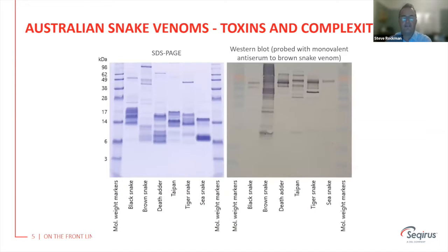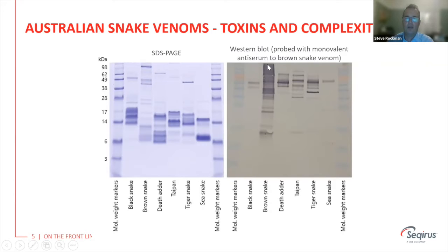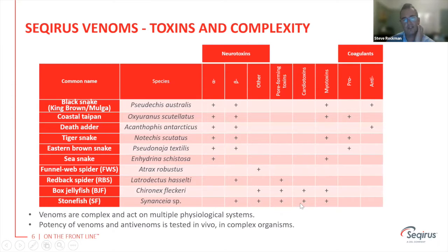On the left-hand side is an SDS-PAGE analysis of six of the snakes found in Australia — you can see that the protein profiles differ by the laddering of different proteins present. On the right-hand side, when we blot with brown snake venom, it lights up very strongly, but we also see cross-reactivity with some of the other snake venoms. Going through the different venoms we focus on in Australia, we have a diverse range of neurotoxins, pore-forming toxins, cardiotoxins, myotoxins, and pro- and anticoagulants present.